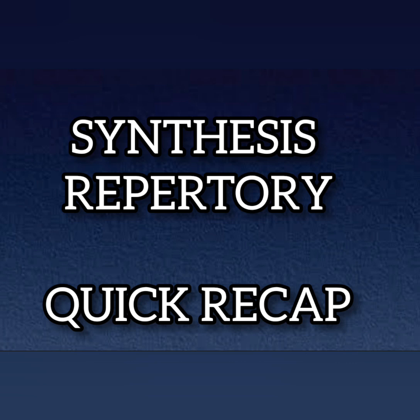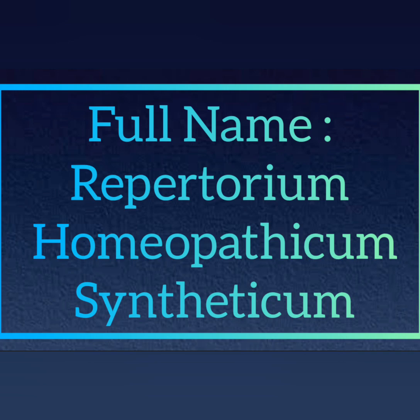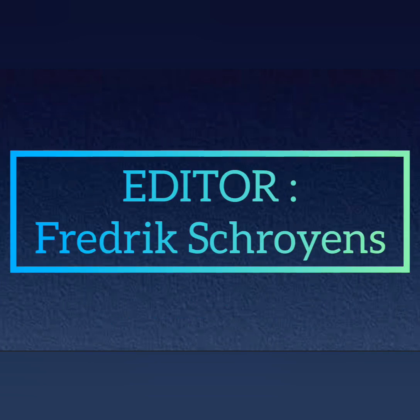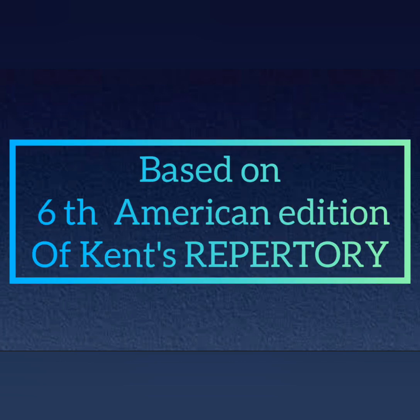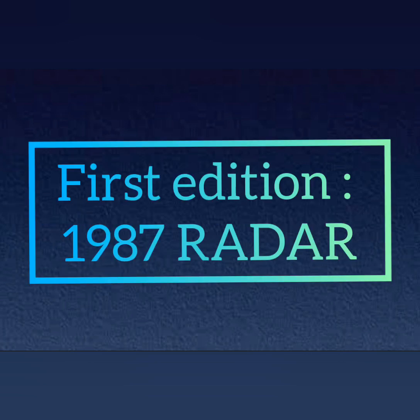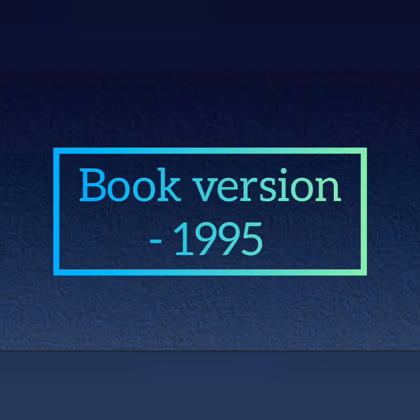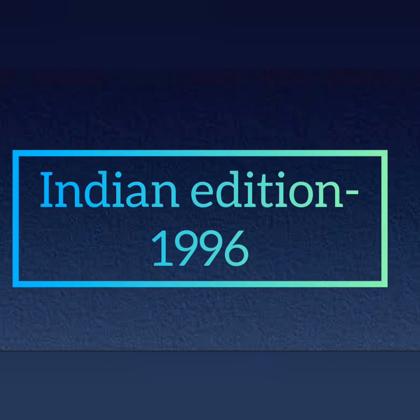Today we are going to see about Synthesis Repertory. Its full name is Repertorium Homeopathicum Syntheticum. The editor was Frederik Schroyens. It is based on the 6th American edition of Kent's Repertory. The first edition was released in 1987 as a Radar edition, the book version was released in 1995, and the Indian edition was released in 1996.